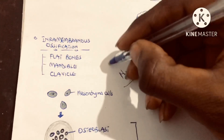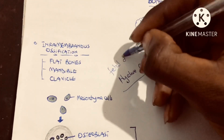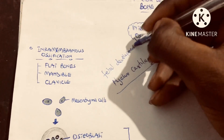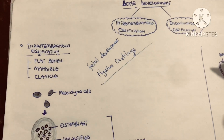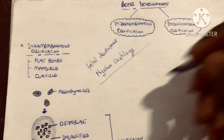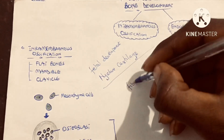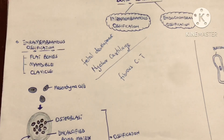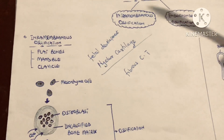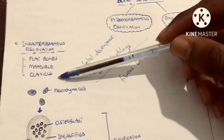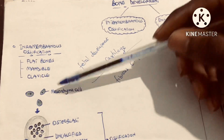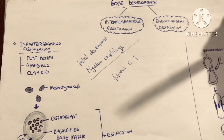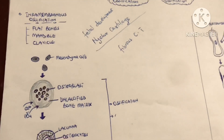Let's look at intramembranous ossification first. This takes place during fetal development and occurs in a fibrous connective tissue. Intramembranous ossification results in the formation of bones like flat bones, the mandible, and the clavicle. Now let's look at the stages of intramembranous ossification.